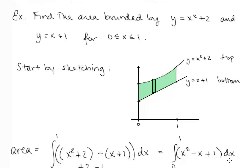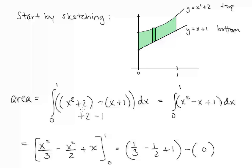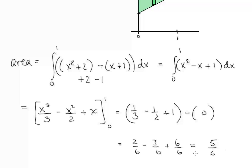Now let's look at the area bounded by y equals x squared plus 2 and y equals x plus 1 for x between 0 and 1. We always want to start by sketching. y equals x squared plus 2 is our top function and y equals x plus 1 is our bottom function. The area is the top function minus bottom function integrated from 0 to 1. Simplifying inside, taking the antiderivative, and plugging in bounds, we get 5 sixths.